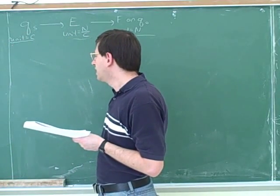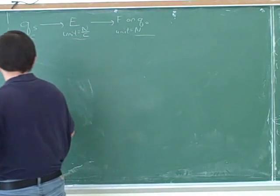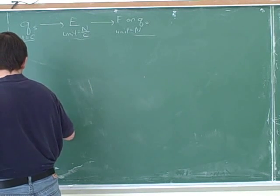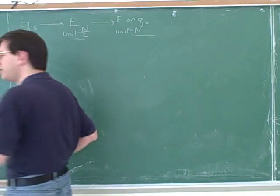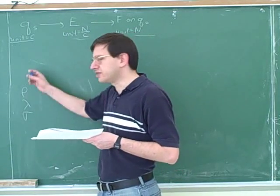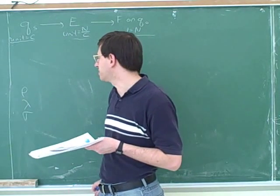Now when you went through the homework, you probably noticed that they were using symbols like rho, lambda, and sigma. So we need to understand what these mean. Well, these are densities, so we have to review the concept of density.